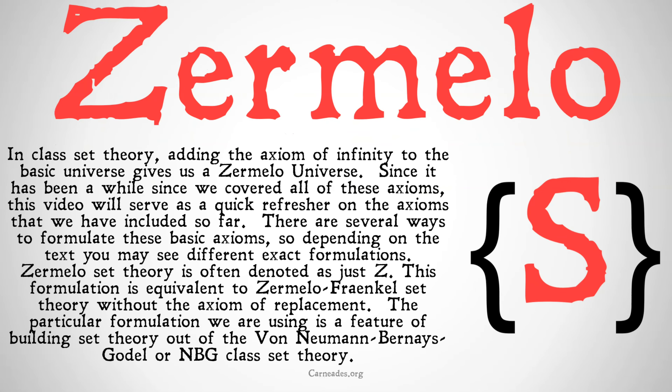In class set theory, adding the axiom of infinity to a basic universe gives us a Zermelo universe. Since it has been a while since we covered all of these axioms, this video will serve as a quick refresher on the axioms we have included so far. There are several ways to formulate these basic axioms, so depending on the text you may see different exact formulations. Zermelo set theory is often denoted as just Z. This formulation is equivalent to Zermelo-Frankel set theory without the axiom of replacement. This particular formulation we're using is a feature of building set theory out of the von Neumann-Bernays-Gödel, or NBG, class set theory.